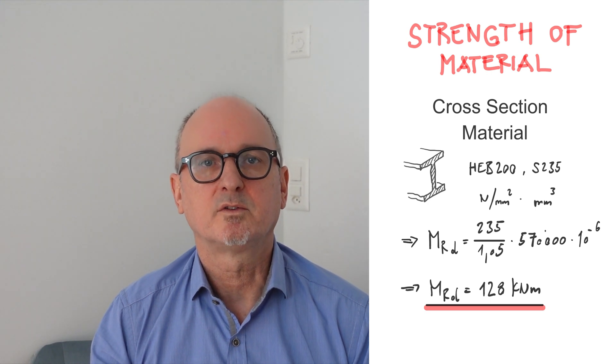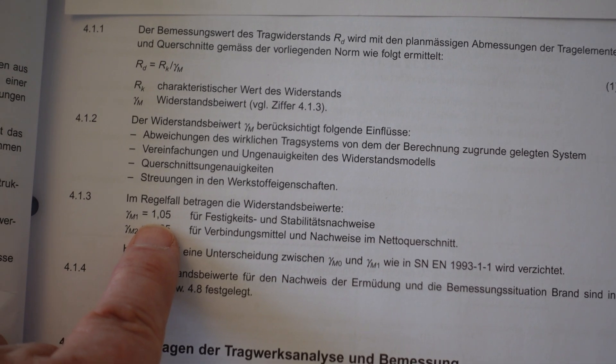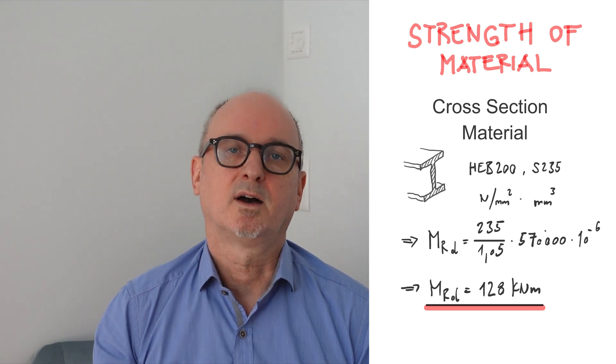The relation between the three values tension, bending moment, and moment of resistance is this one: tension is equal to bending moment divided by moment of resistance. From here we now can calculate the resisting bending moment on design level. We divide the yield tension Fy by the resistance factor for steel, which is 1.05, and multiply this by the moment of resistance. The result, 128 kNm, is the resisting bending moment on design level.